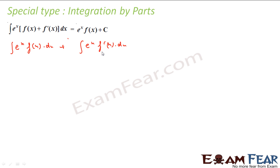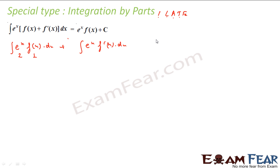As I discussed, in integration by parts, the choice of first function is very critical. So let us use our memory tip ILATE: Inverse, Logarithmic, Algebraic, Trigonometric, Exponential. Exponential is considered the last option. So I will take e^x as second and f(x) as first function, because exponential is the last possible option for us.